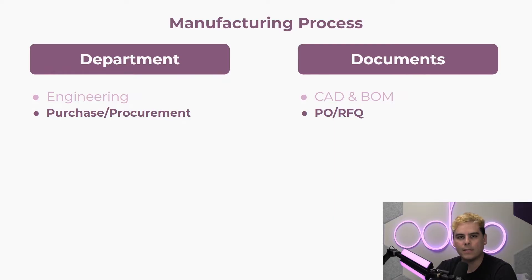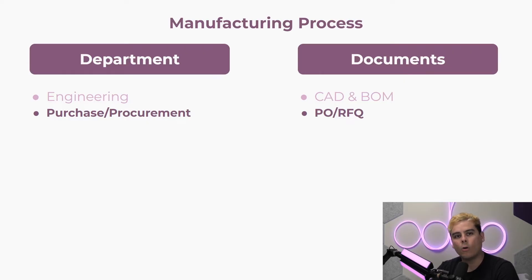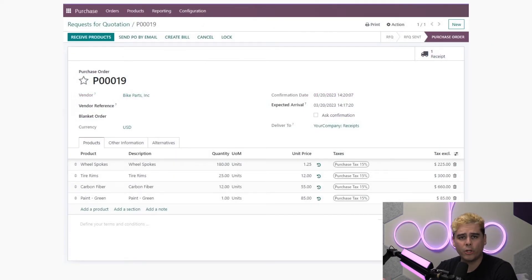The procurement team determines how and when components are to be ordered, either with automated reordering rules or by pulling information from replenishment reports. They send out requests for quotations or purchase orders to acquire components and raw materials that aren't in stock.